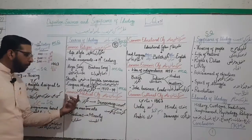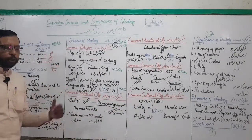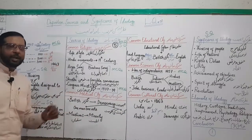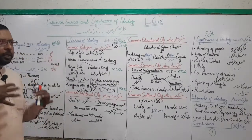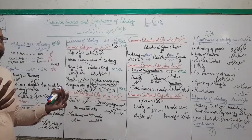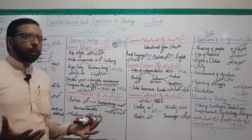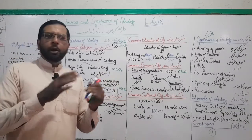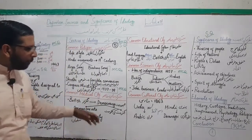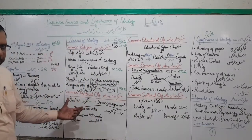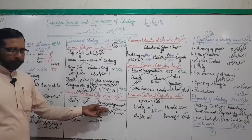Doosra point hai common political objectives — mushtarka siyasi maqasid. Kisi bhi nation ke liye uski political identity bohot zyada important hoti hai. In the subcontinent, with the arrival of the British, a new concept of government was introduced — that was democracy.